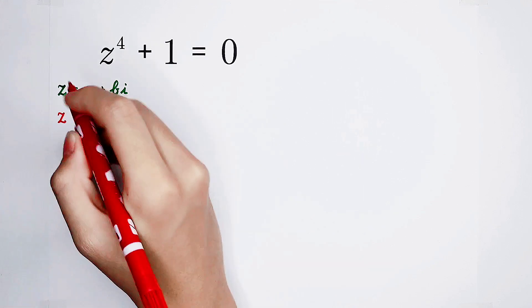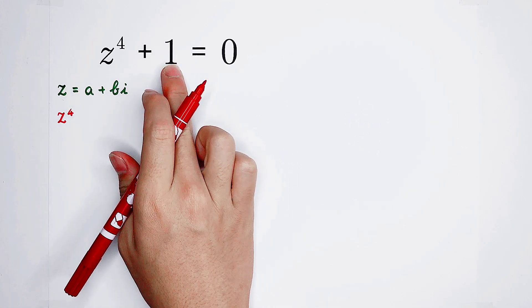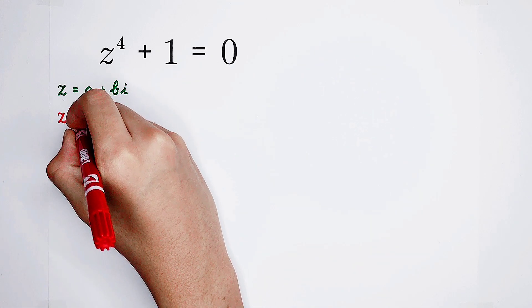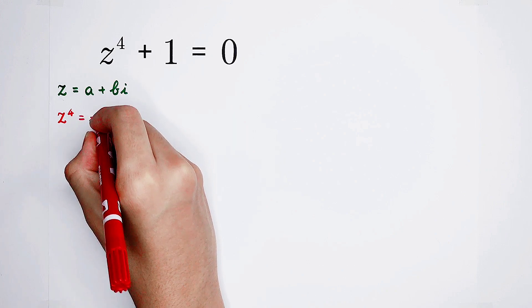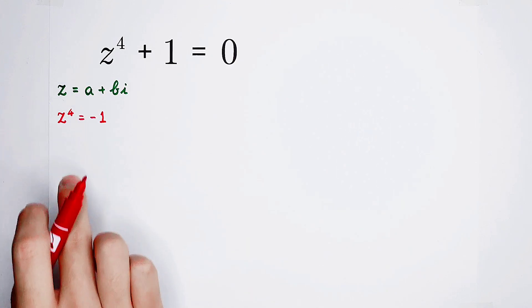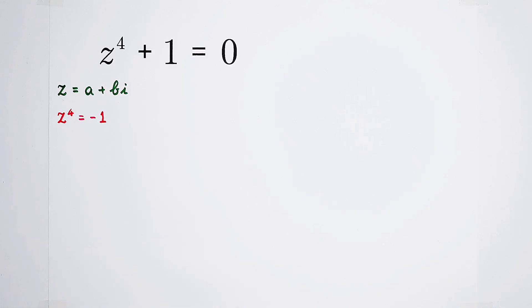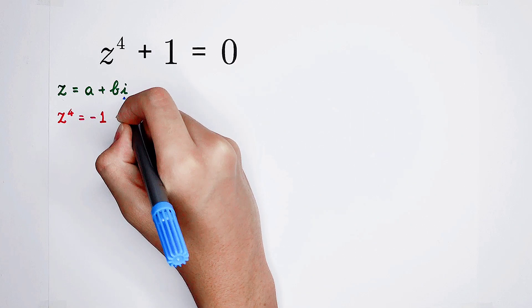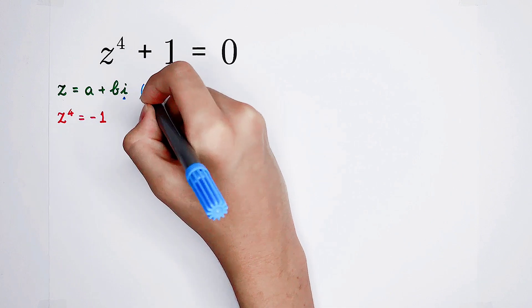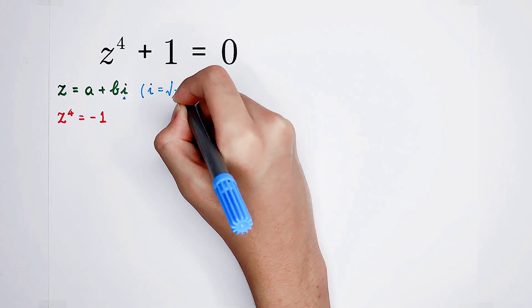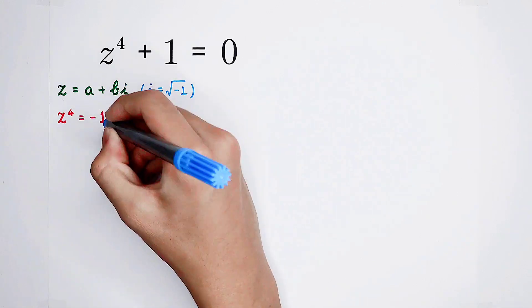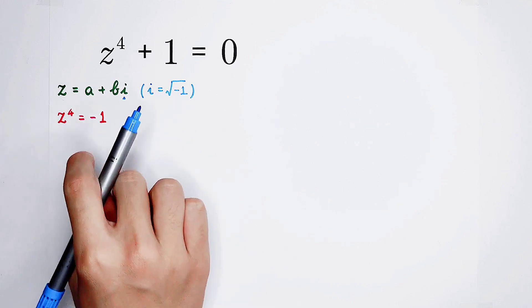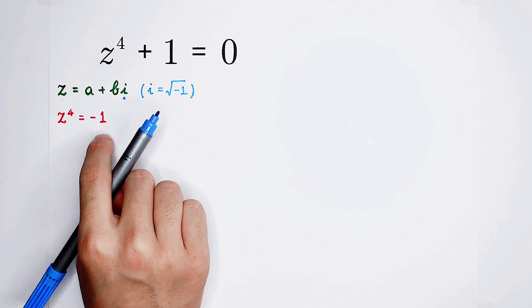At the beginning of the video, we subtracted 1 from both sides to get z to the power 4 equals negative 1. Negative 1 is equal to positive or negative i squared, because i — the imaginary unit — is the square root of negative 1. So z to the power 4 equals positive or negative i, all squared.